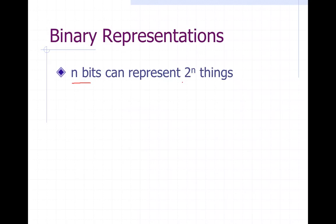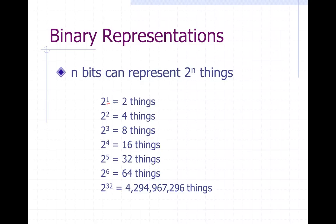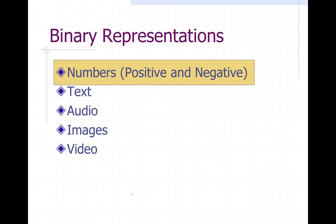So what do you think? If I have n bits of information, I can represent 2^n things. Two to the one is two things, two to the two is four things, two to the three is eight things. Notice every time you raise the digit from two to three, to four, to five, to six, it doubles the number of things you can represent. For example, two to the thirty-two — that's basically how big most computer systems are — can represent over four billion things.